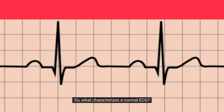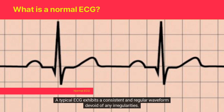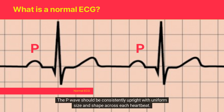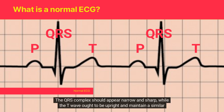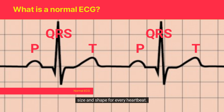So what characterizes a normal ECG? A typical ECG exhibits a consistent and regular waveform devoid of any irregularities. The P wave should be consistently upright with uniform size and shape across each heartbeat. The QRS complex should appear narrow and sharp, while the T wave ought to be upright and maintain a similar size and shape for every heartbeat.